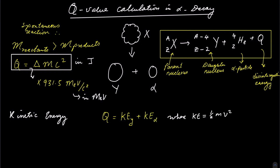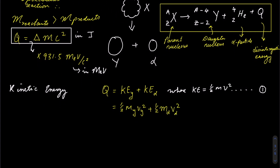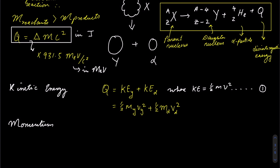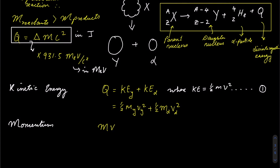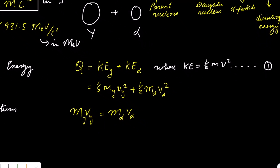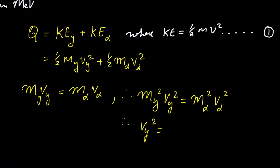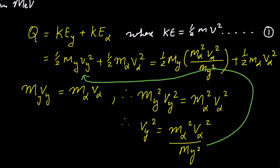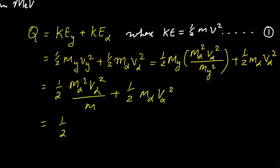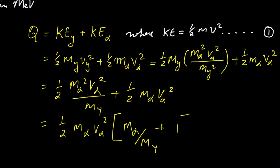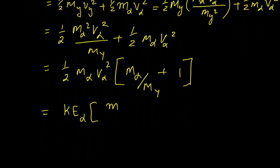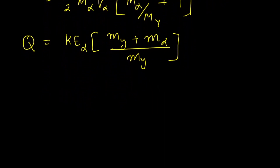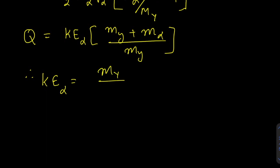Replacing KE with its standard expression and using the momentum expression, conservation of momentum requires that the momentum of the daughter nucleus and the alpha particle must be equal. Squaring that expression and rearranging to get V of the daughter nucleus, we substitute into the expression for Q to get a newer expression mainly in terms of alpha. The Q value is essentially the kinetic energy of the alpha particle multiplied by the mass of the daughter nucleus plus the mass of the alpha particle, divided by the mass of the daughter nucleus. This expression can be rearranged to find the kinetic energy of the alpha particle.